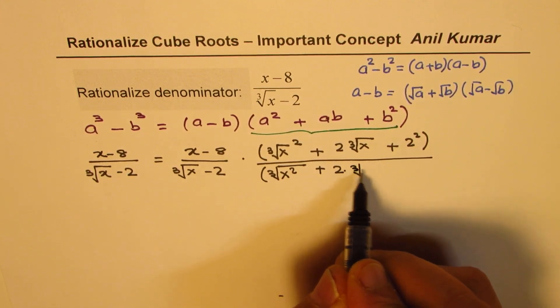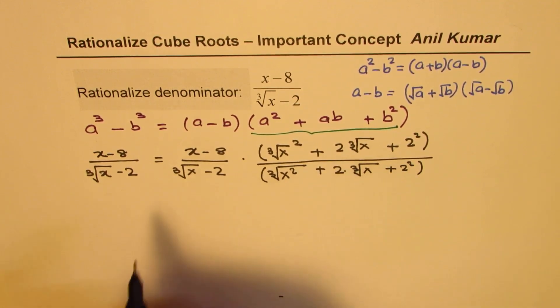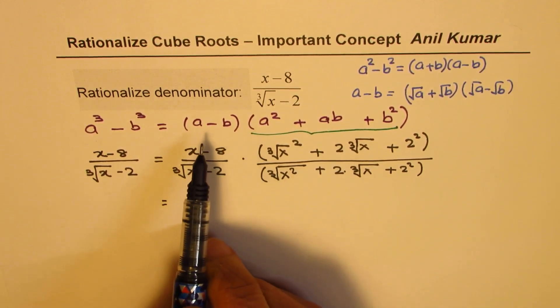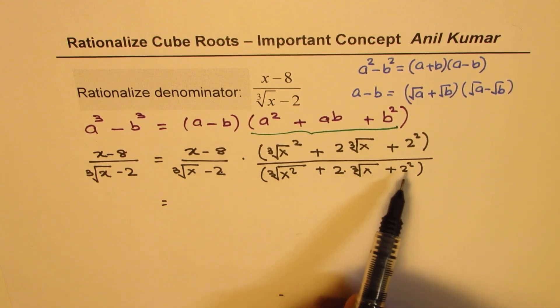So, you get 2 times cube root of x, plus 2 square. So, when you do so, since the formula here is straightforward, a minus b times a square plus ab plus b square will give us a cube minus b cube.